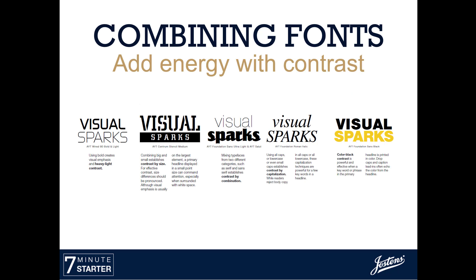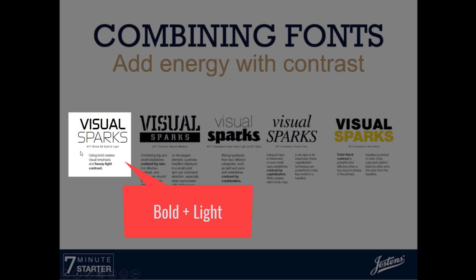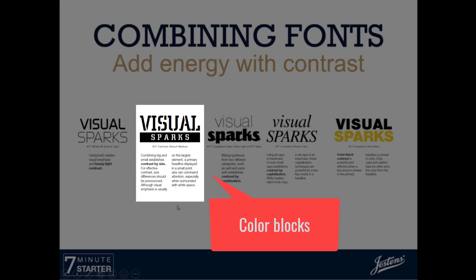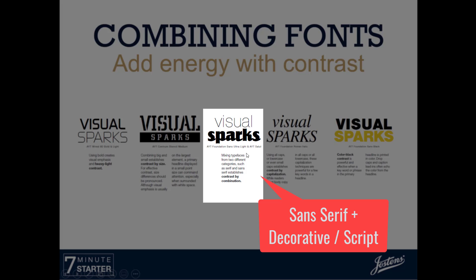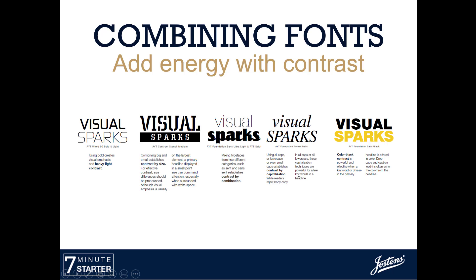When we pick out fonts, we want to use that design principle of contrast. There are a couple of different ways we can do this. We can use bold versus a light font. We could use contrast by size — making one font bigger versus a smaller font. This also uses contrast with color, surrounding the background with black and white. Mixing two different types of font faces works too, such as a sans serif on top and a decorative font on the bottom.